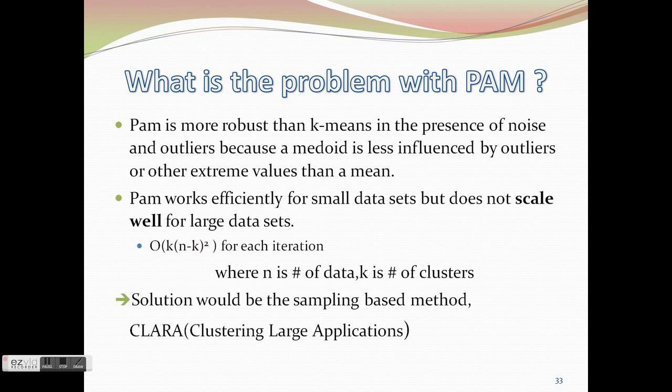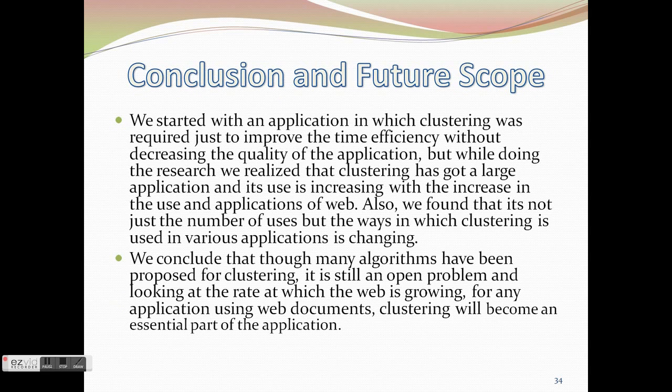The main problem with PAM is it is more robust than K-means but it can lead to many number of swaps thus leading to less effective time complexity.